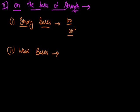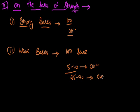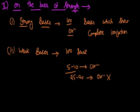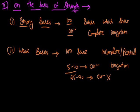On the other hand, if a base undergoes incomplete or partial ionization — like if I take a hundred molecules of a base and only five to ten molecules release hydroxyl ions, while the remaining 90 to 95 molecules do not release their hydroxyl ions — then these bases which undergo incomplete ionization are termed as weak bases. So bases which show complete ionization are termed as strong bases, while bases which undergo incomplete or partial ionization are termed as weak bases. That is the classification on the basis of strength.